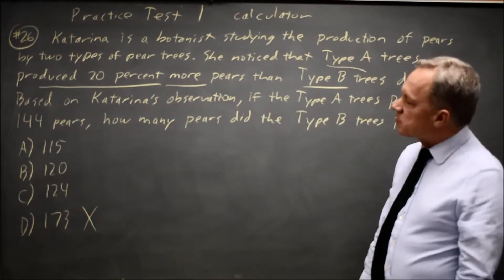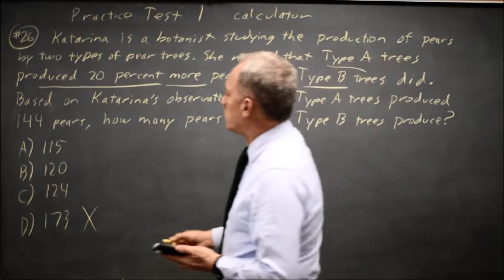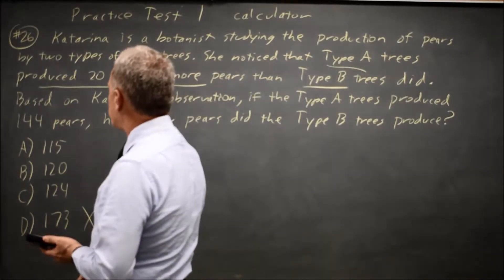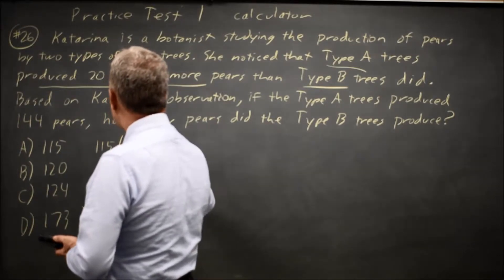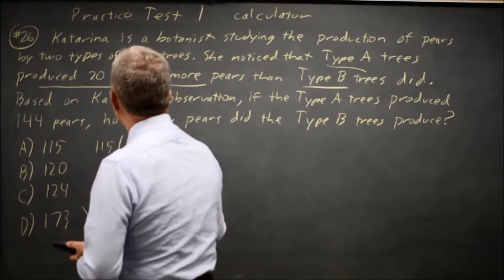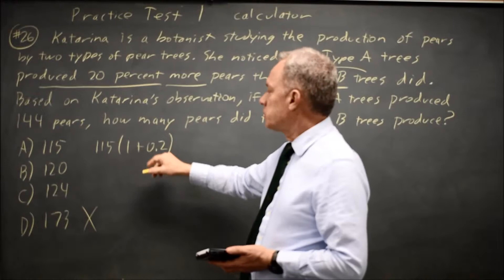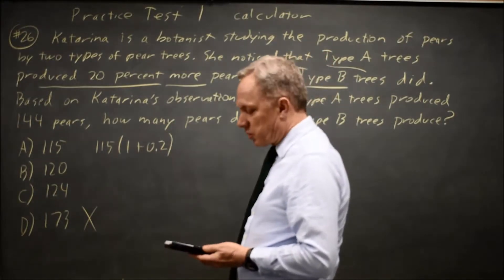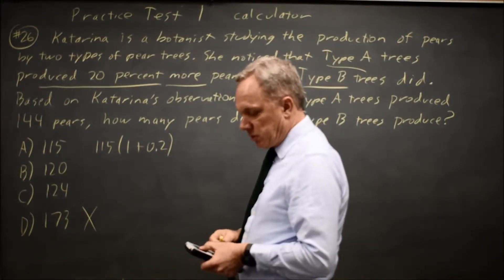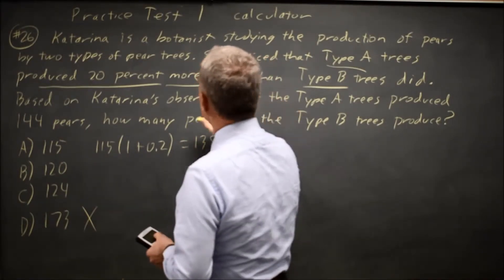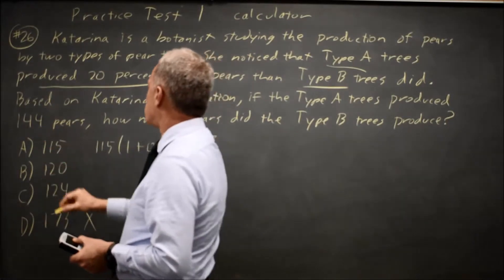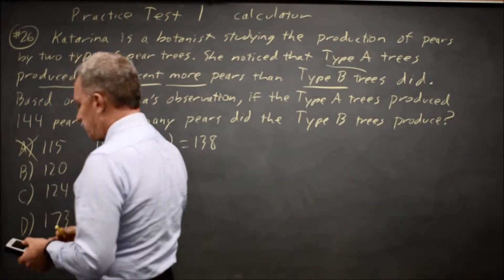One way to answer this is to find 20% more than 115, which would be 115 times 1 plus 0.2. Times 1 gives you the amount, and 0.2 gives you 20% more, so 115 times 1.2 gives us 138, which is not 144, and type A produces 144, so that's not correct.